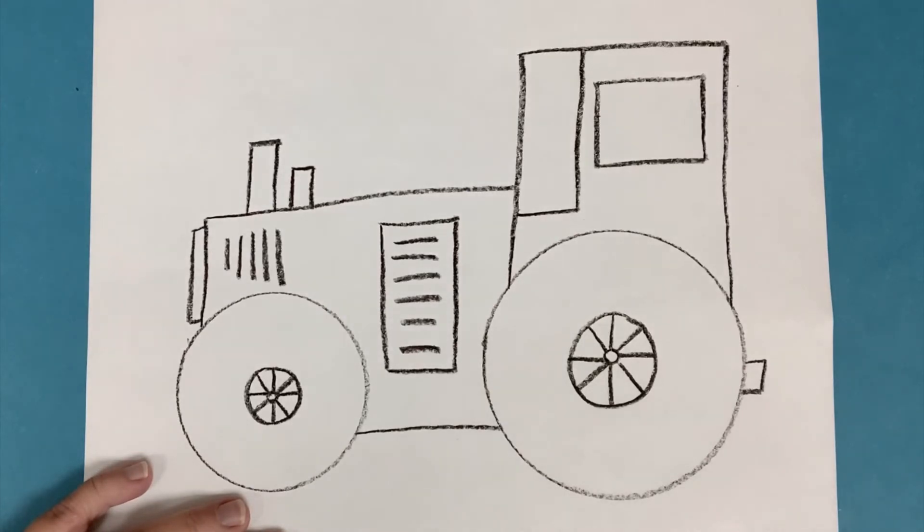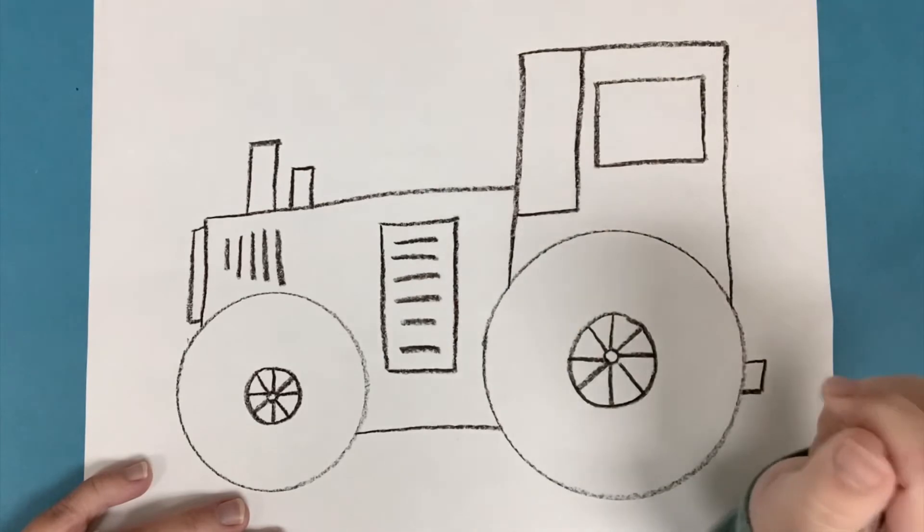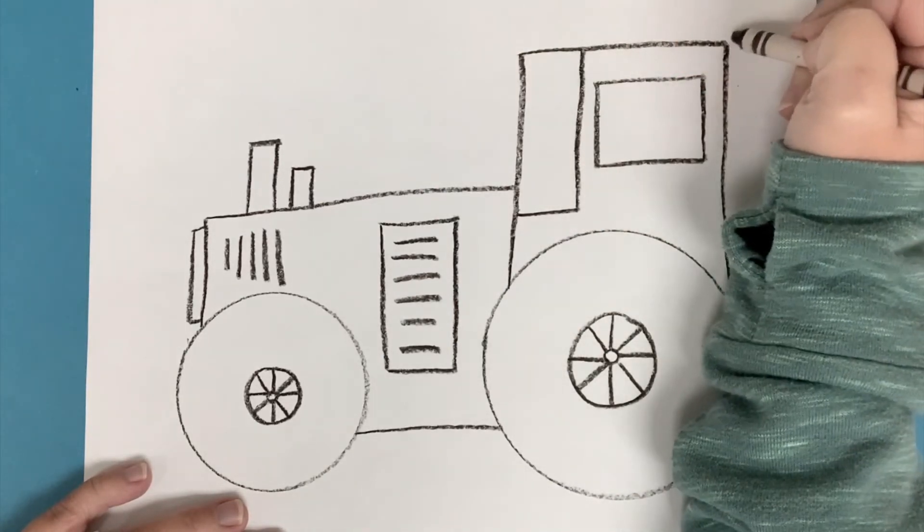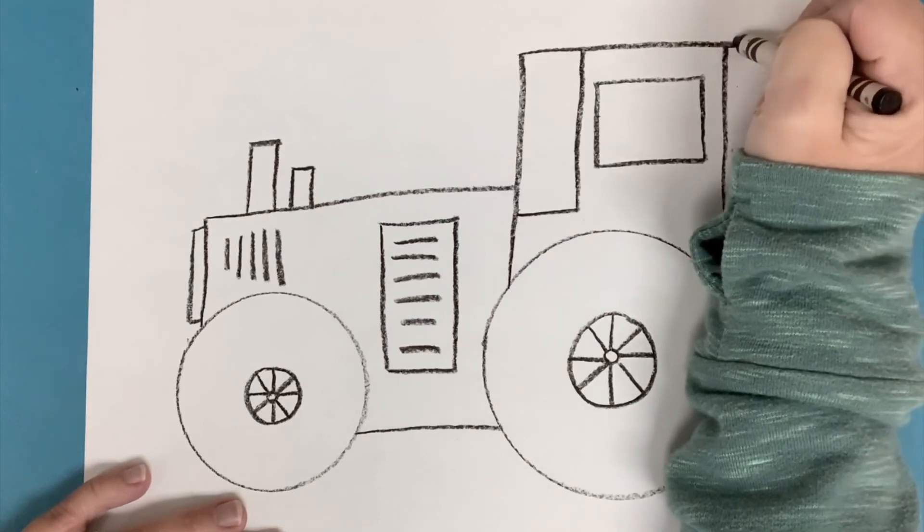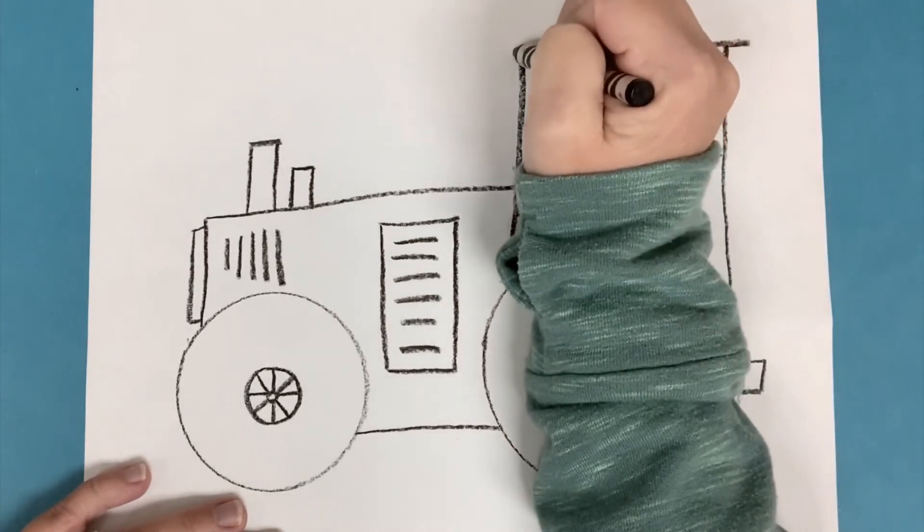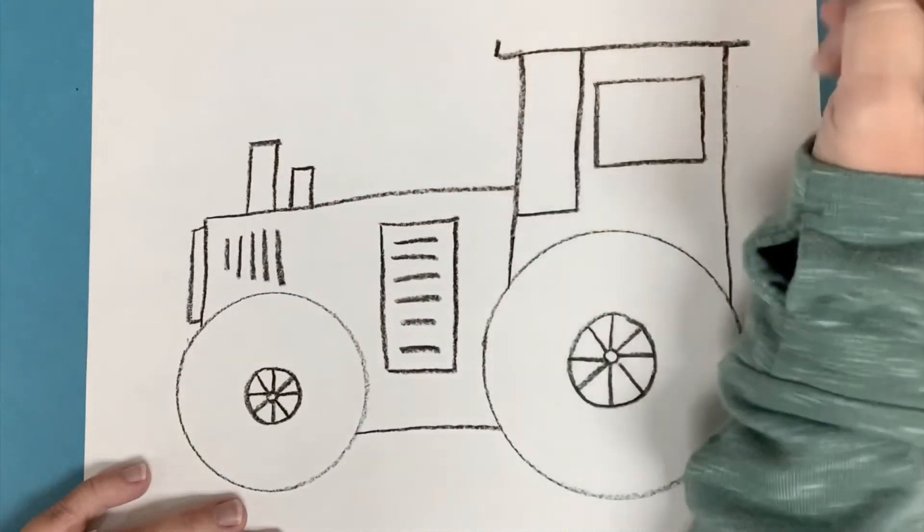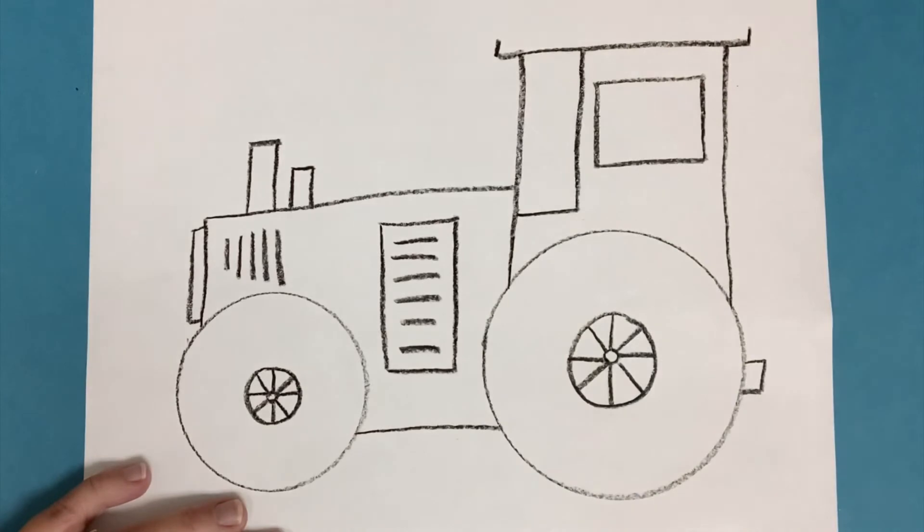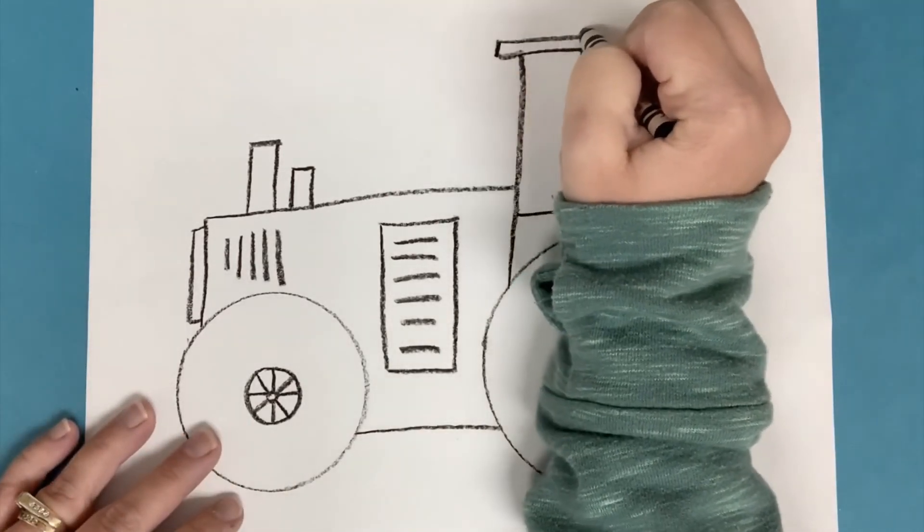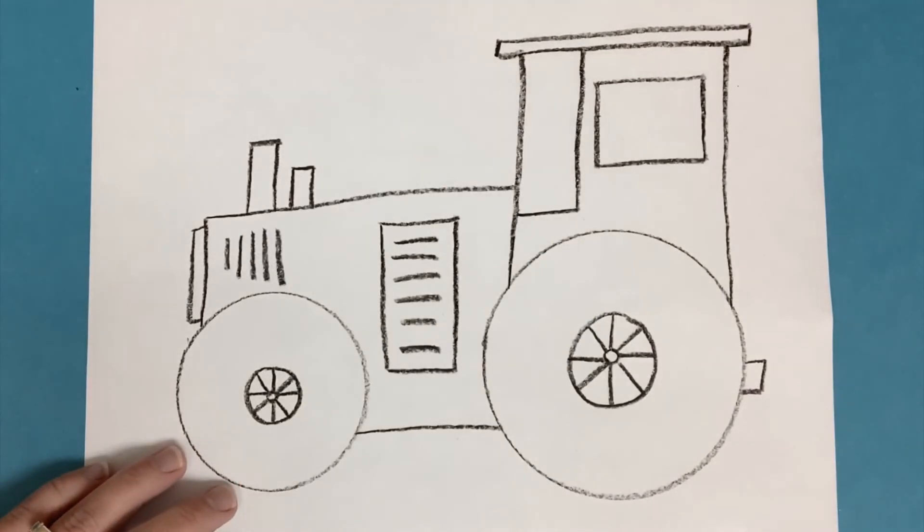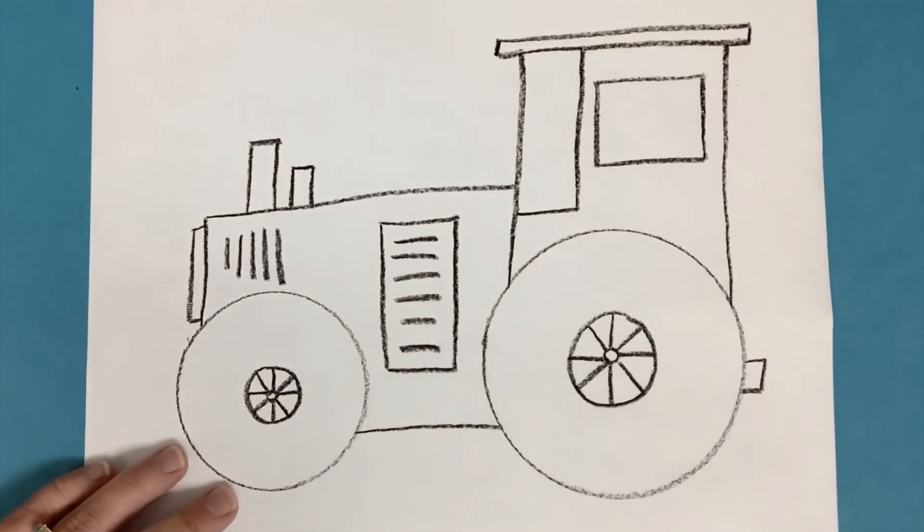The last detail I'm going to put is just a little top on our cab here. So for that I'm going to make my line come out a little bit longer. Like that. Two little short horizontal lines. Two very short vertical lines coming up. And then a long horizontal line going across to close it up. And that is my tractor.